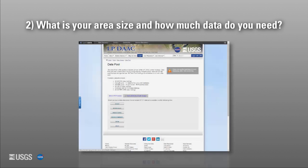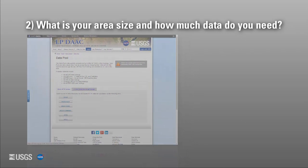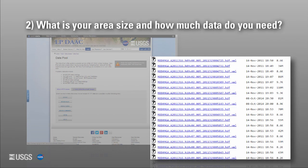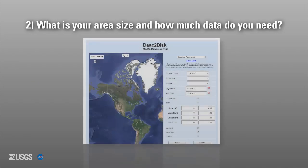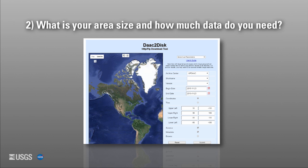Data Pool allows you to download a specific file from a data set. You can also use the DAC to Disk service for bulk orders of files and to search for data based on an area.